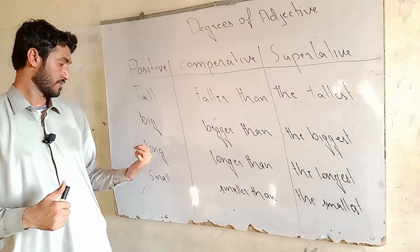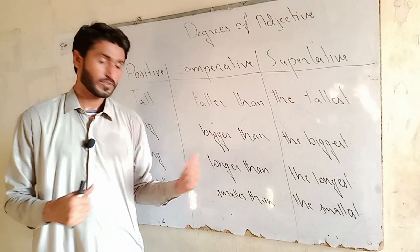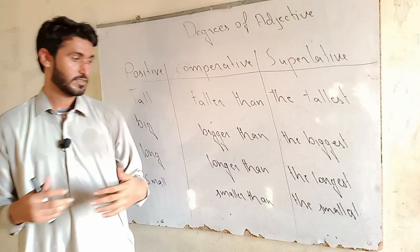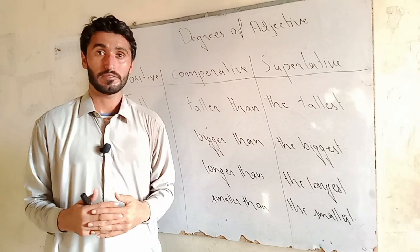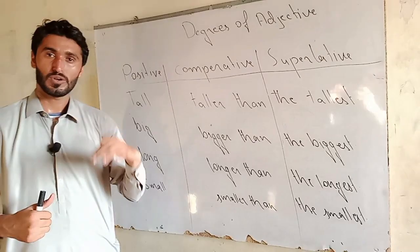The third adjective is long. Warren has a long tower — there is no comparison. Youpon has a longer tower than Warren — there is comparison of two towers. Zong has the longest tower — there is comparison of three towers.